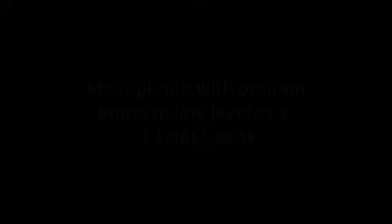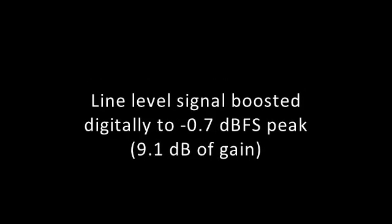Line level keeps everything at a proper level — that's the whole idea of a mic preamp. It's called a mic preamp because it is the amplifier before your speaker amplifier. There are two amplifiers in your typical sound chain. This is what line level sounds like with a peak around negative 12 dBFS, and this is what that same line level sounds like boosted digitally to negative 0.7 dBFS peak. There are also two different line levels: consumer line level and professional line level, and consumer line level is lower.